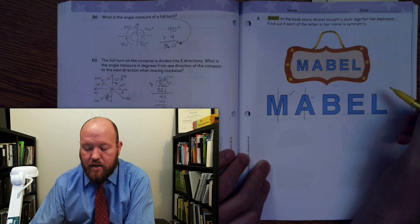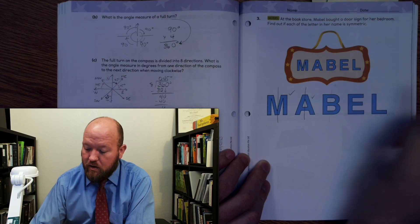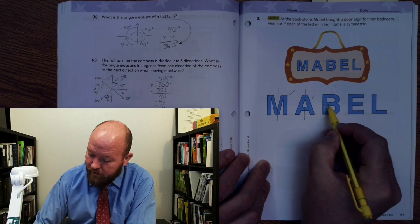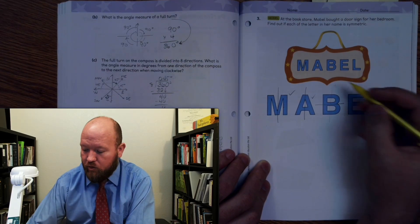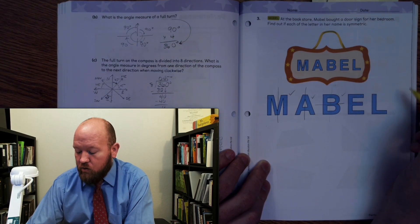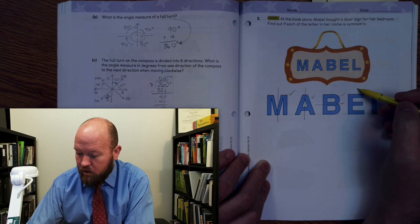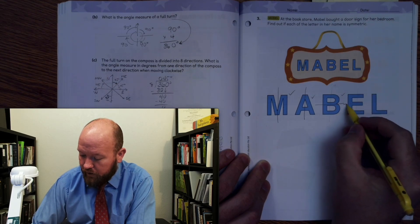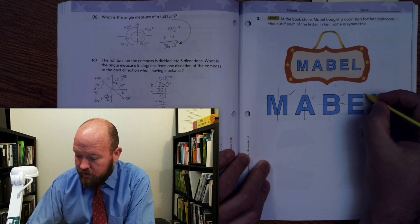What about the B? Can I divide it like that? But I can divide it like that and it folds over perfectly. So that's good. What about the E? Can I fold the E here? No, that doesn't work. But I can do it here. So the E does work.